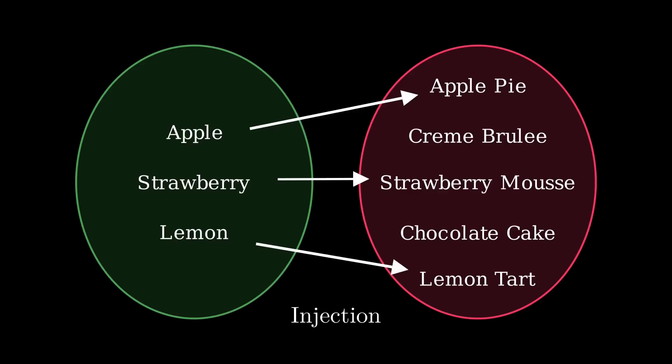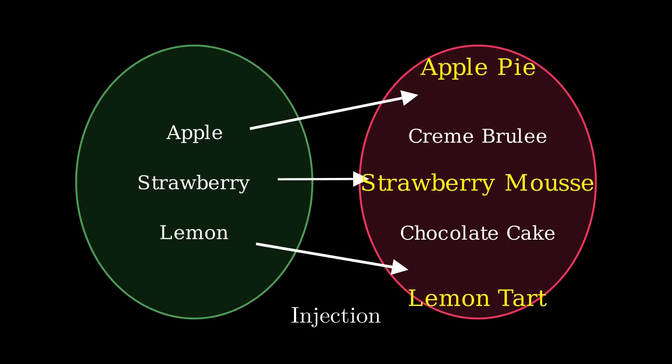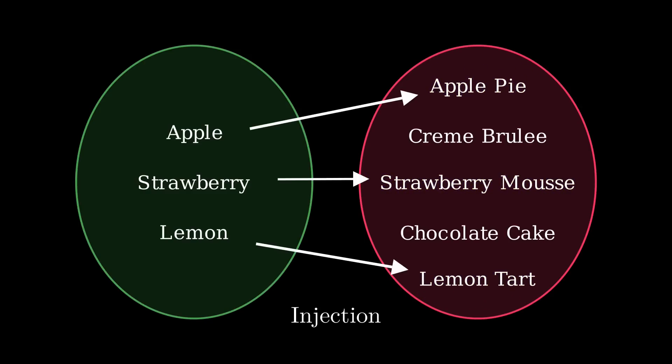We can prove that we have an injection by showing that every fruit maps to a dessert, and that given a dessert that was mapped to, we can figure out which fruit we started with. This in turn proves that the size of our fruit set is smaller than or equal to the size of our dessert set.